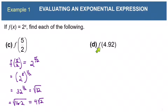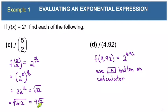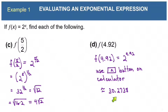In part D, we have f(4.92), and to evaluate that we'll compute 2^4.92. You can evaluate this on your calculator. There's no good way to evaluate it in exact form like part C, but if you use the caret button on your calculator, you can do 2^4.92, which comes out approximately 30.2738.